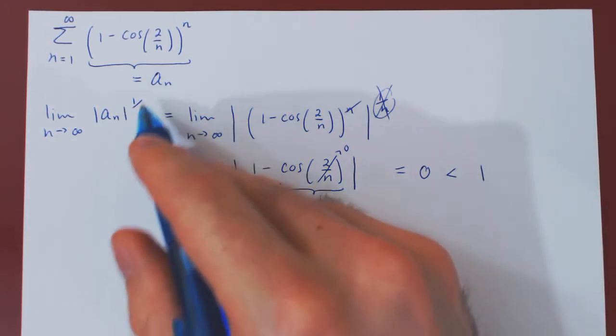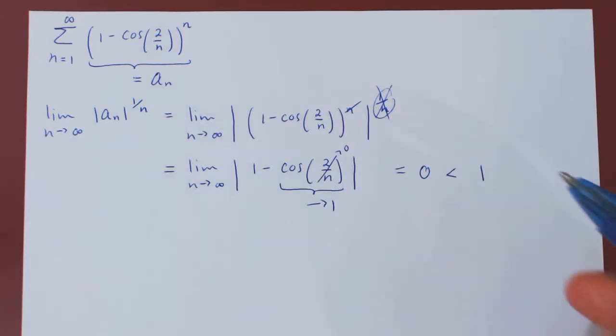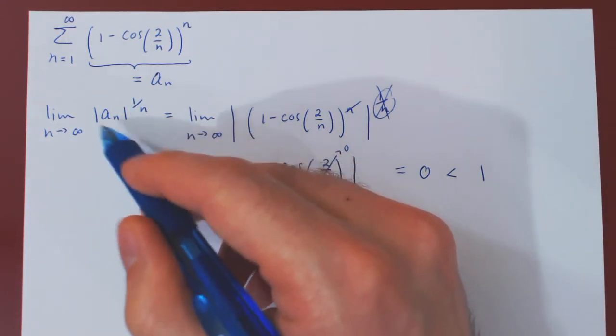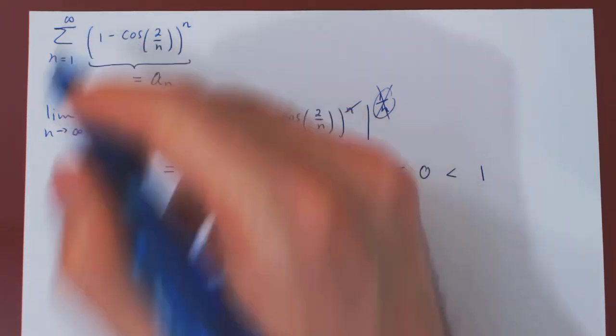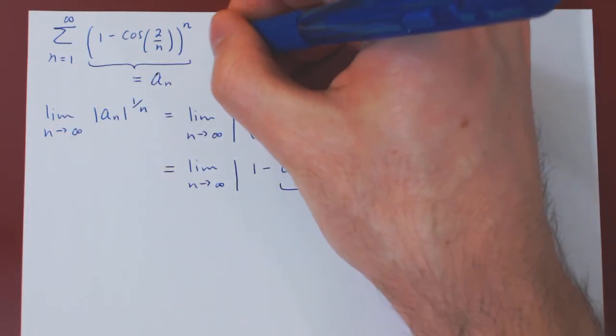And so, if this limit is less than 1, the root test says that the corresponding series, summing a_n from some point on to infinity, converges absolutely.